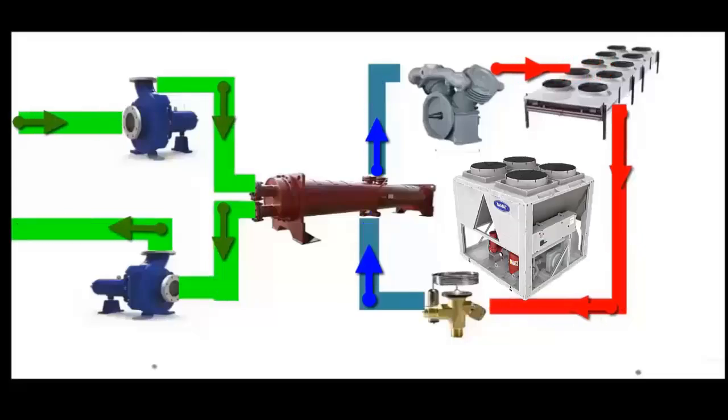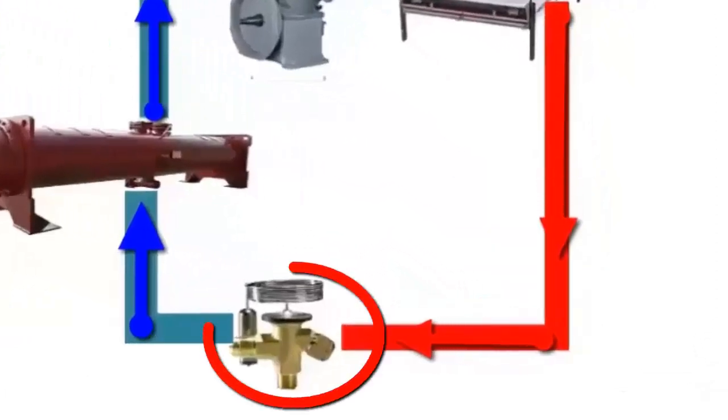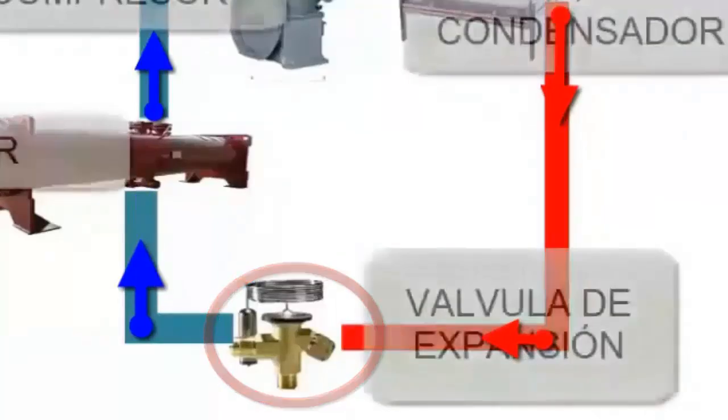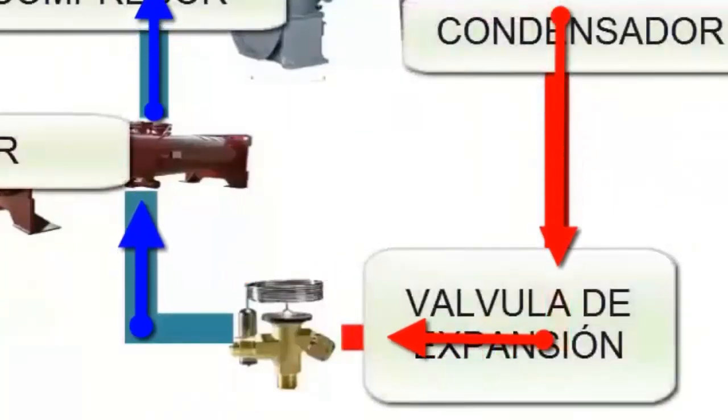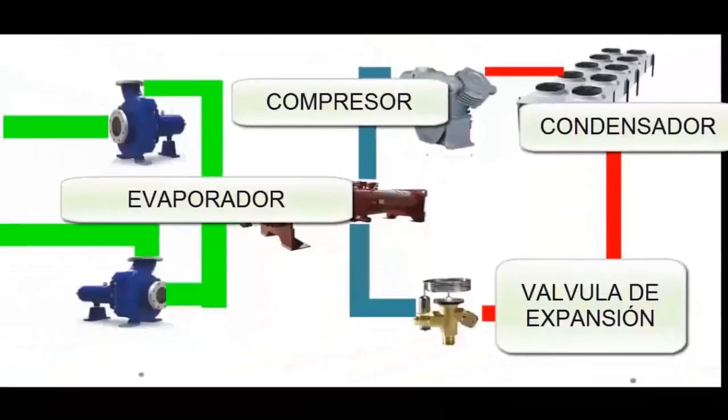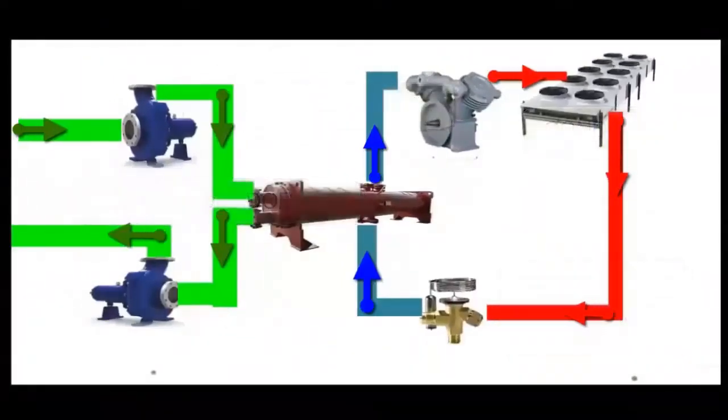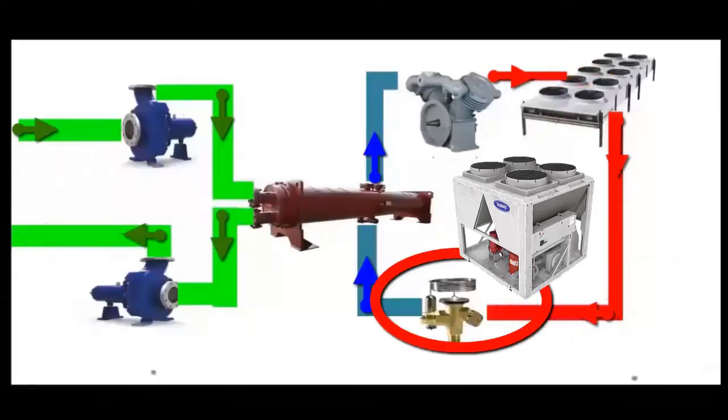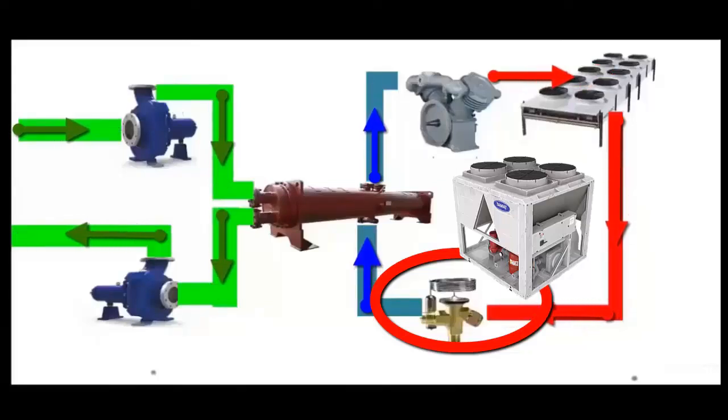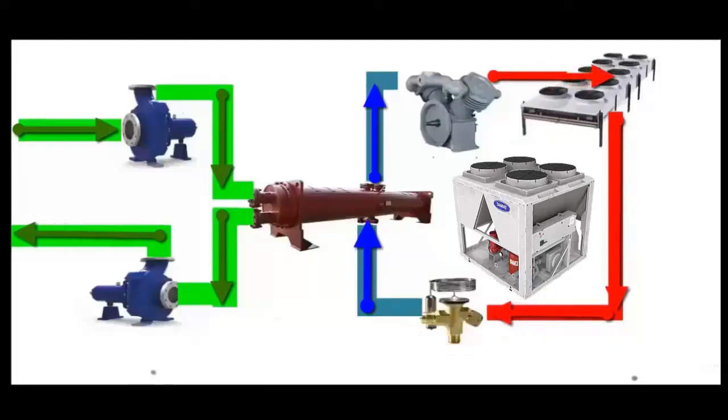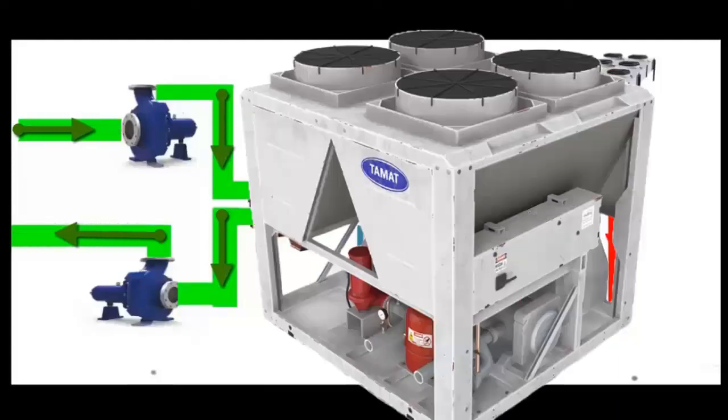After passing through the condenser, the refrigerant, now in a high pressure liquid state, is directed to the expansion valve. This valve functions to reduce the pressure and temperature of the refrigerant, preparing it to re-enter the evaporator. The pressure reduction in the expansion valve is crucial because it allows the refrigerant to enter the evaporator in a suitable state to absorb more heat from the water, thus restarting the cooling cycle. This cycle repeats continuously while the chiller is in operation, ensuring a constant supply of cold water for the system.